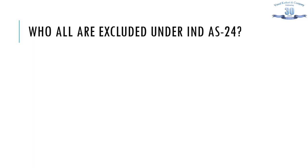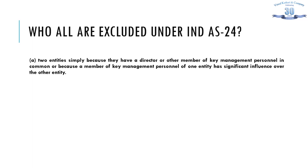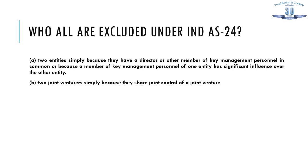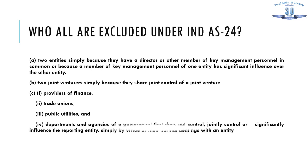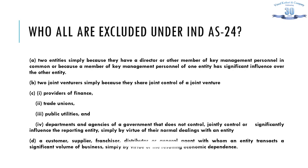Now let us understand the exclusion list under Ind AS 24. Two entities simply because they have a director or other member of KMP in common, or because a member of KMP of one entity has significant influence over the other entity, will not make them related parties to each other. Two joint ventures simply because they share joint control over a joint venture are not related parties. Providers of finance, trade unions, public utilities, and department agencies of government that do not control, jointly control or significantly influence the reporting entity simply by virtue of normal dealings are also not related parties. Similarly, a customer, supplier, franchisor, distributor or general agent with whom an entity transacts a significant volume of business simply by virtue of resulting economic dependence is excluded.